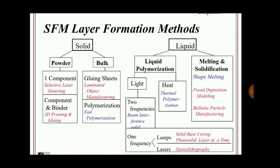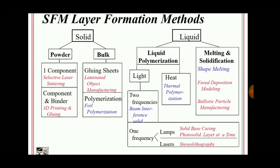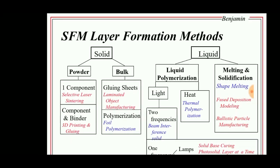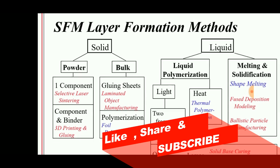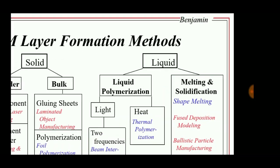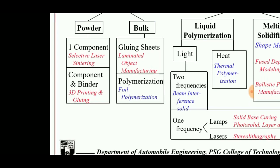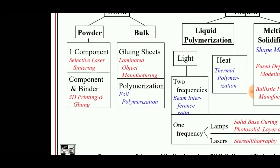SFM layer formation methods include two general types: solid and liquid. For solid, in the case of powder, components are made using selective laser sintering — where a laser melts and binds the powder — as well as binder 3D printing and gluing technology. In the bulk solid case, laminated object manufacturing and polymerization foil methods are used.